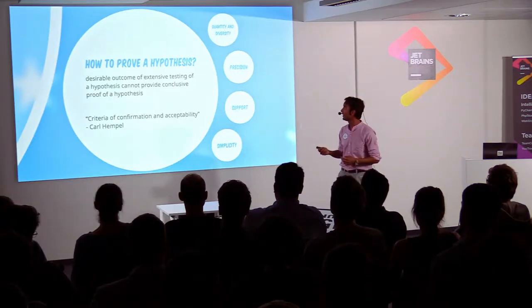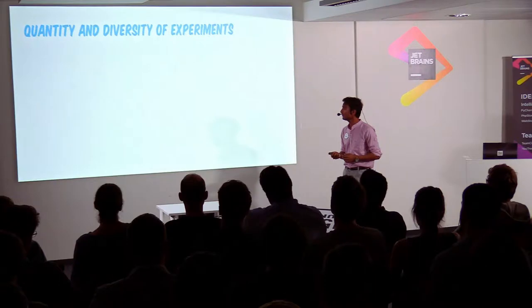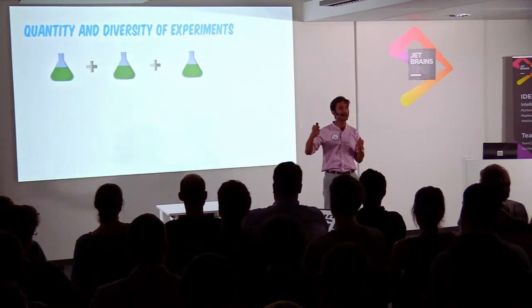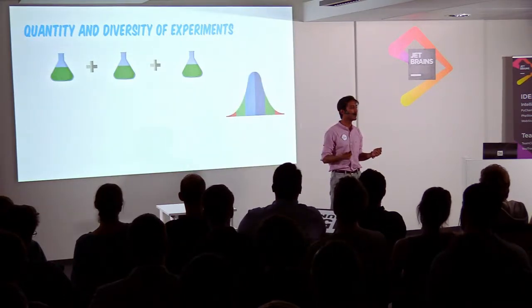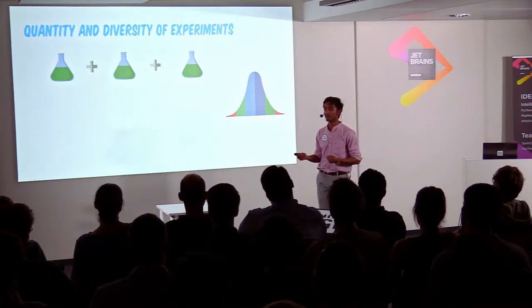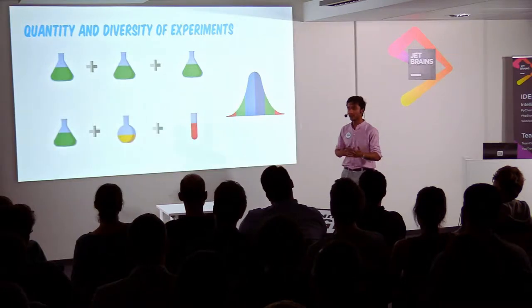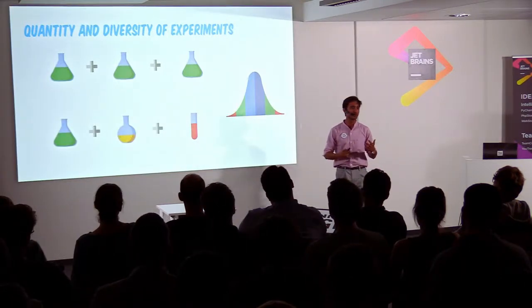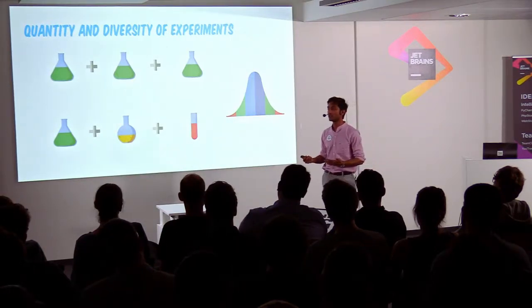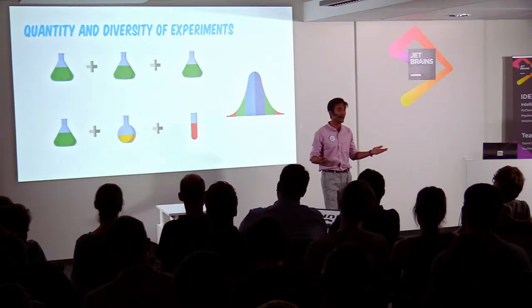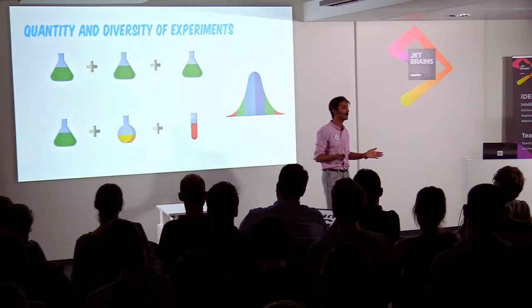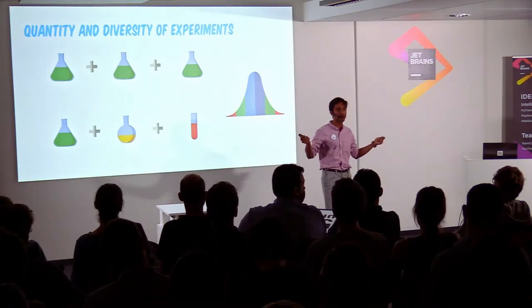Let's look at quantity and diversity. The idea behind quantity is that if I can do multiple experiments and reach the same conclusion, it makes my hypothesis extremely strong and I can promote it to a theory. If I can also diversify my experiments, make some slight changes, and still end up with the same result, it makes my hypothesis even stronger. The simple example is gravity — it doesn't matter what you drop, the acceleration due to gravity is always going to be the same, no matter where you drop it or which object you drop.